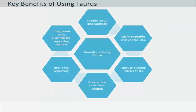Some of the benefits of using Taurus are extremely simple setup and upgrading. It's a command line tool and quite easy to run from various CI tools like Jenkins. It provides an easily readable, version control friendly and unified DSL — domain specific language — to define load test scenarios. You can execute existing JMeter, Grinder, Gatling or Selenium tests, create new tests from scratch using a DSL, merge multiple existing test scripts and DSL driven tests into a single scenario, and benefit from real-time reporting and integration with Blazemeter reporting service.